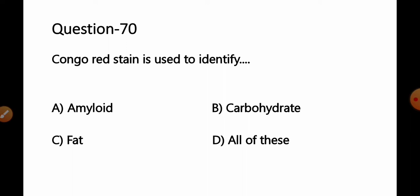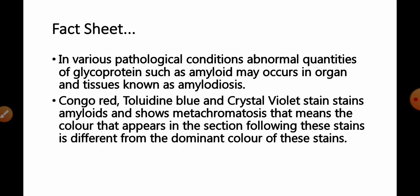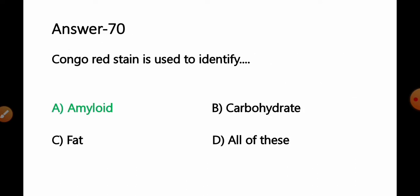Question number 70: Congo red stain is used to identify — Option A: amyloid; B: carbohydrates; C: fat; D: all of these. In various pathological conditions, abnormal quantities of glycoproteins such as amyloid may occur in organs and tissues, known as amyloidosis. Congo red, toluidine blue, and crystal violet stain amyloids and show metachromasia. So Option A — amyloid — is the correct answer.